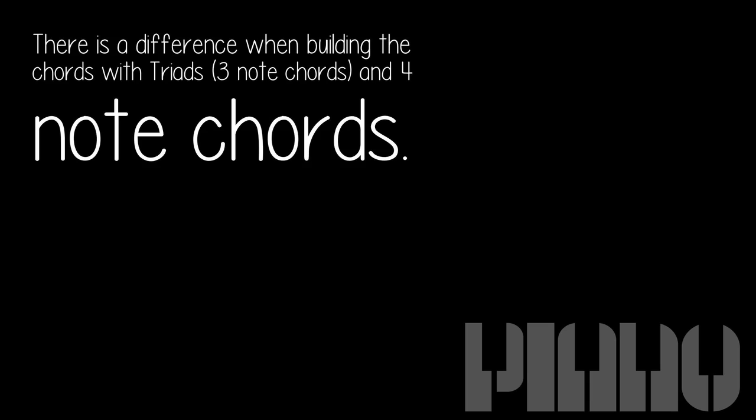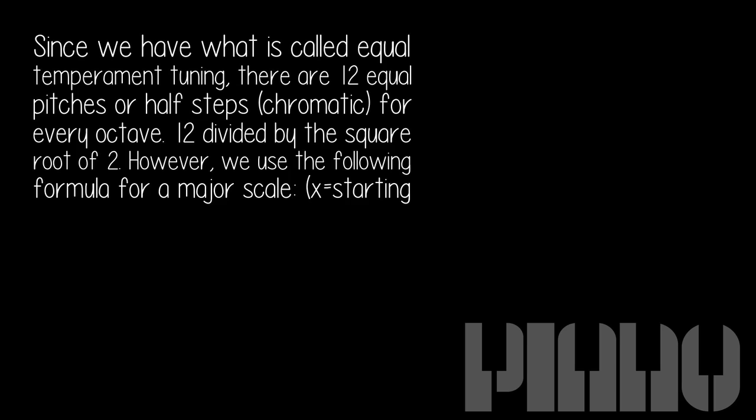There is a difference when building the chords with triads — three-note chords — and four-note chords. Since we have what is called equal temperament tuning, there are 12 equal pitches or half steps, chromatic, for every octave.